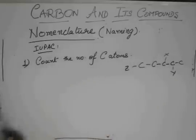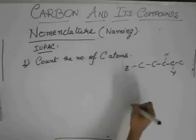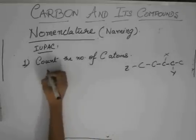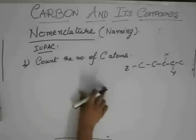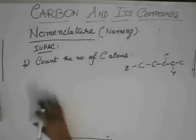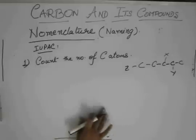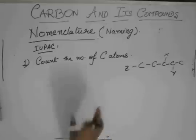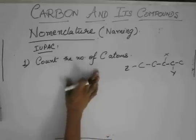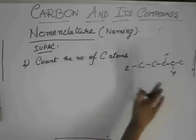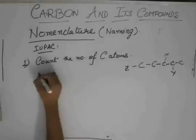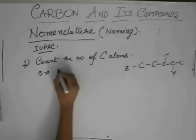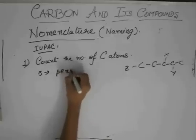So, we all know that, we saw that the prefix used for one carbon atom is meth, two carbon atoms is eth, three carbon atoms is prop, four is but, five is pent, and six is hex. So, same applies over here. Count the number of carbon atoms, and if, suppose the number of carbon atoms is five, then first name the compound as pentane.